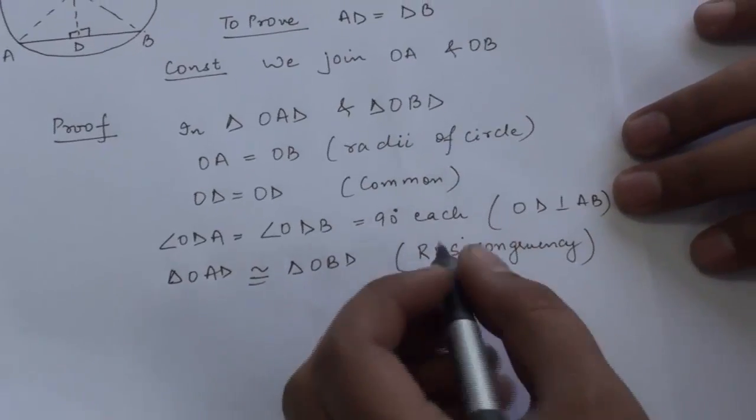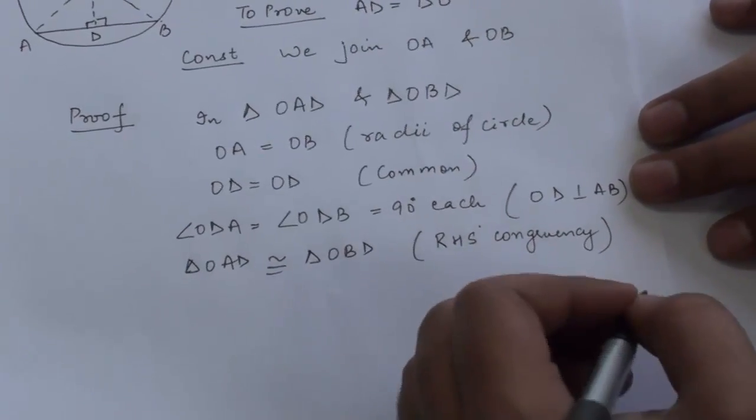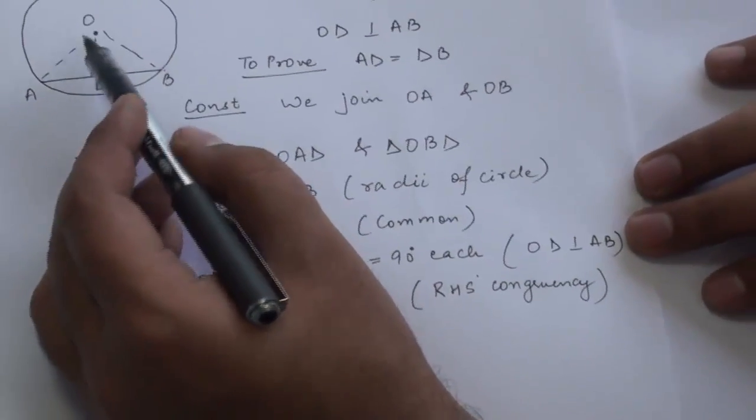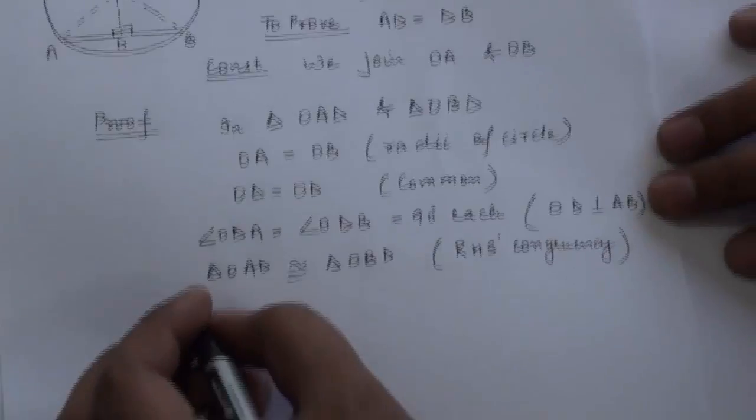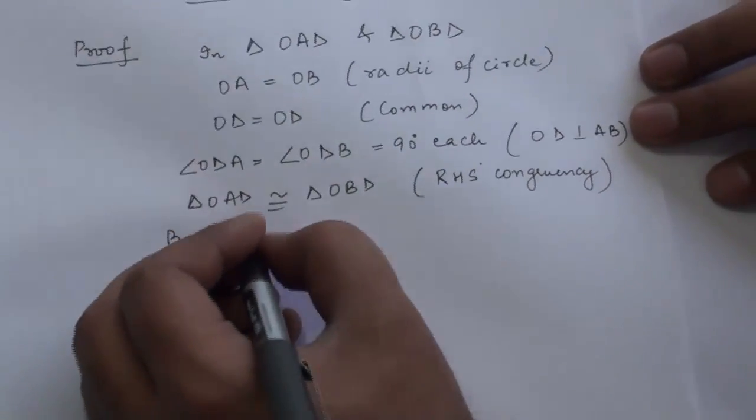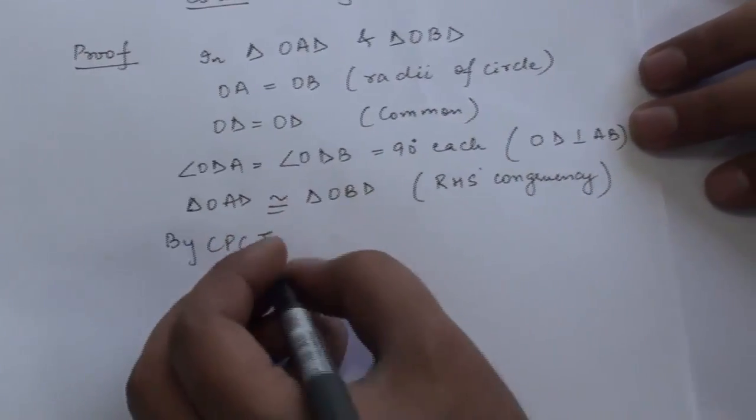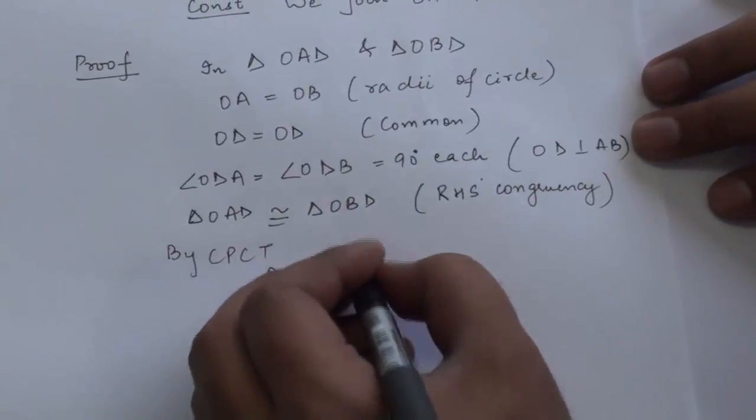Now, RHS congruency is right angle hypotenuse side congruency. Right angle came, hypotenuse came, and the third side came. By CPCT, we have: AD is equal to DB.